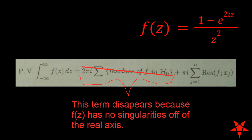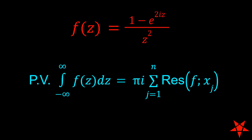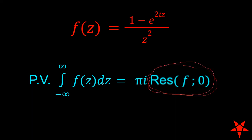We are then left with pi i times the sum of the residues on the real axes, and since there is only one residue located on the real axes, we can lose the summation and just call it pi i times the residue of f at x, or z if you prefer, equals zero. All that is left now is calculation of the residue.